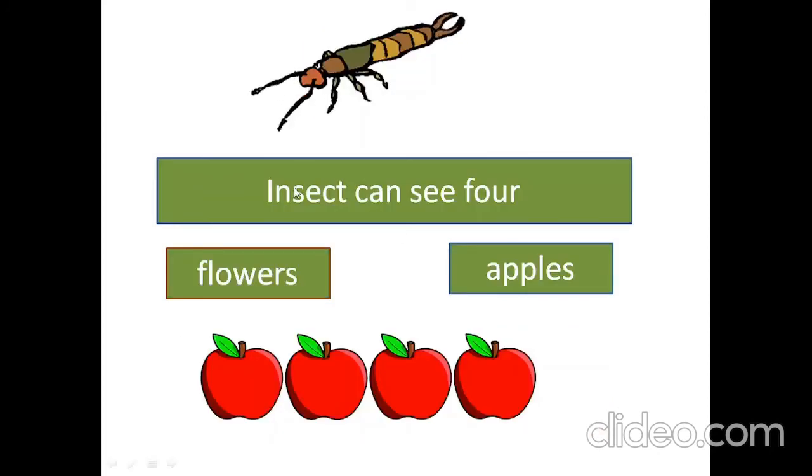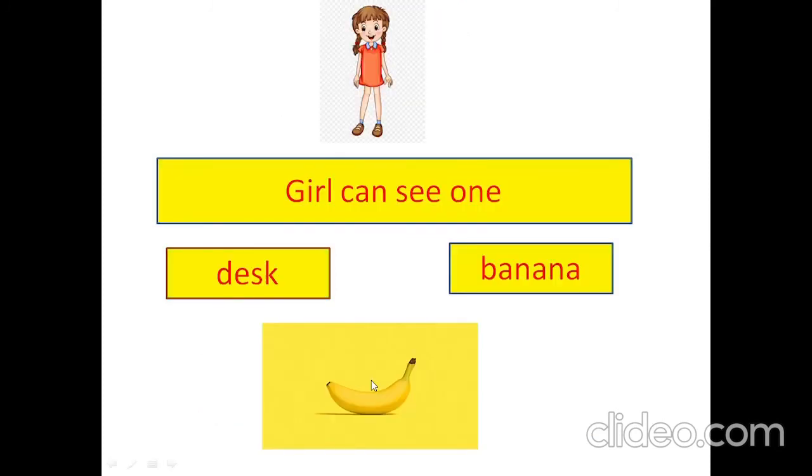Insect can see four flowers or apples. Apples. Girl can see one desk or banana. Banana.